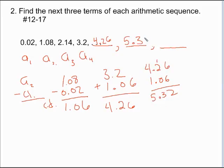And then take 5.32 plus 1.06, and that gives us 6.38.